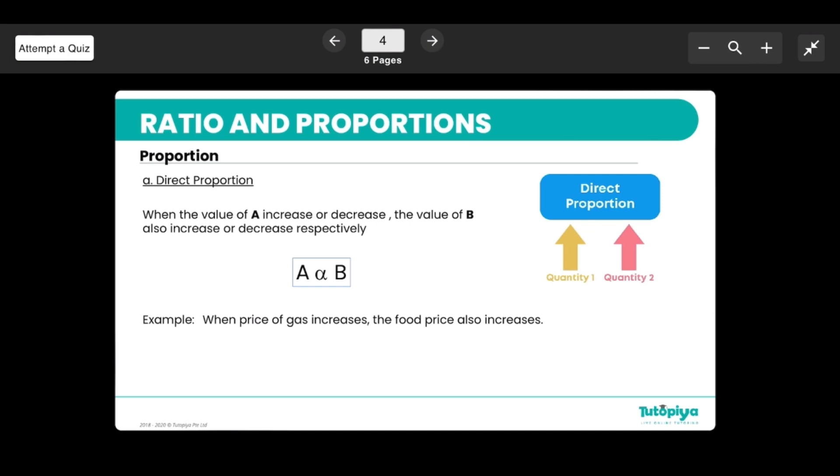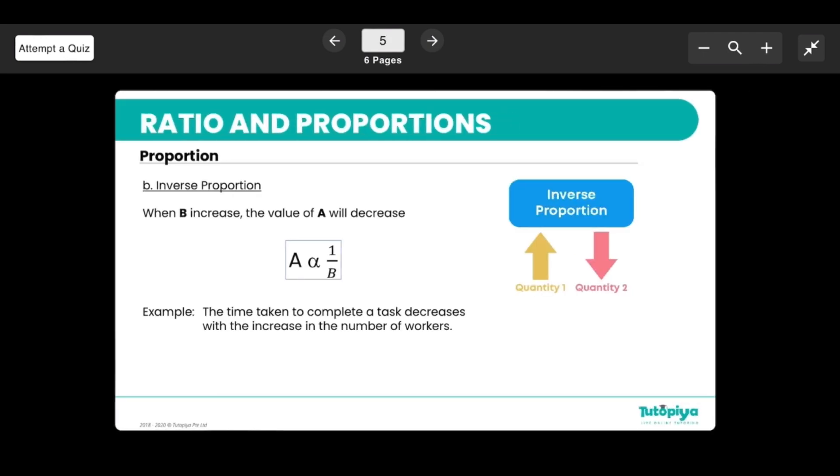An example of this would be when the price of gas increases, the food price also increases. Then we have inverse proportion.